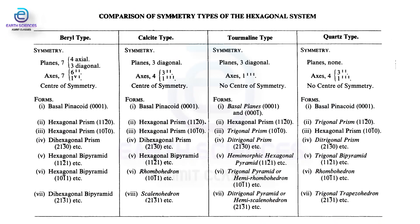Now we will look at the comparison of symmetry types in the hexagonal crystal system: beryl type, calcite type, tourmaline type, and quartz type. Beryl type has seven planes of symmetry, seven axes of symmetry, and a center of symmetry. Calcite type has three planes and four axes of symmetry, and a center of symmetry. Tourmaline type has three diagonal planes and one threefold axis but no center of symmetry. Quartz type has no planes of symmetry, four axes, and no center of symmetry.